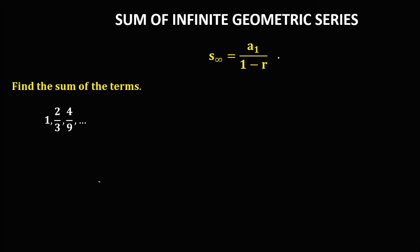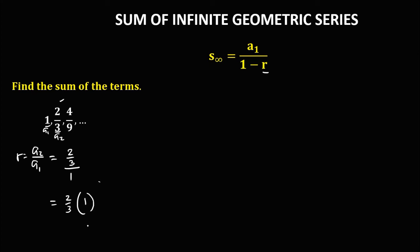For this given problem, again we need to find the common ratio. To solve for the common ratio, that's a sub 2 over a sub 1. So a sub 1 is 1 and a sub 2 is 2/3. We can rewrite this as 2/3 times the reciprocal of 1, that's 1. Therefore, the common ratio is 2/3.